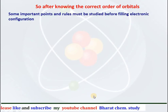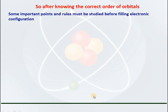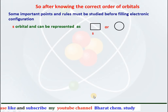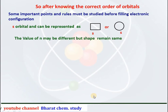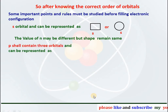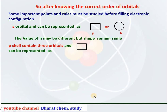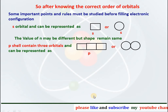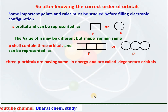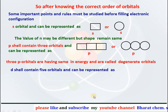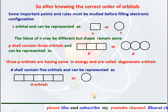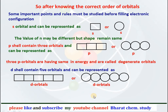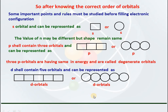After knowing the correct order of orbitals, some important rules must be studied before filling the electronic configuration. The s orbital can be represented by a box or a circle — it may be 1s or 2s but if it is an s subshell, the shape remains the same. The value of n may be different but the shape remains the same.